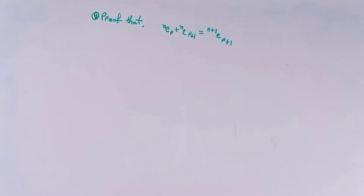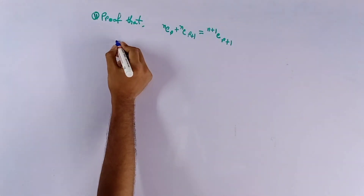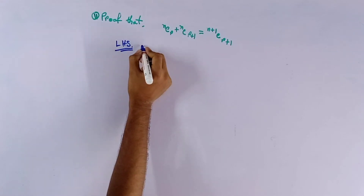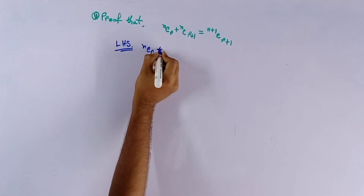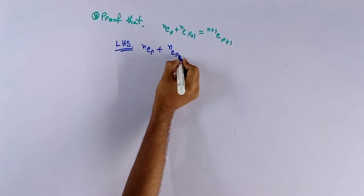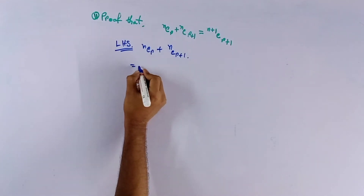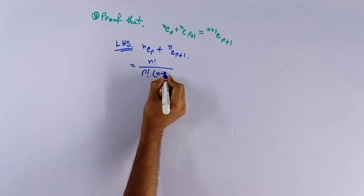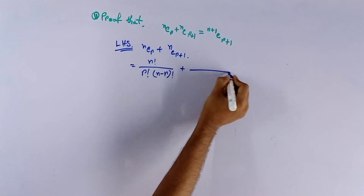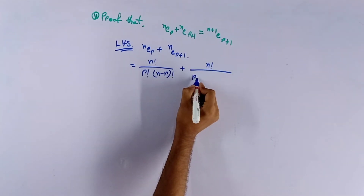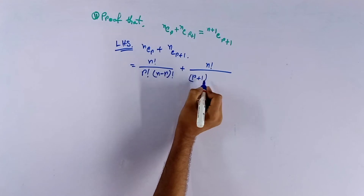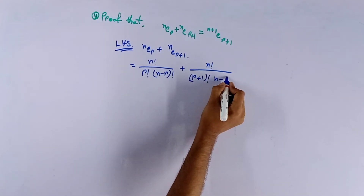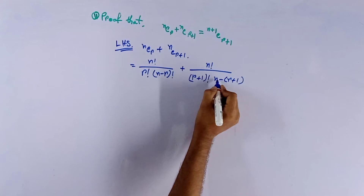Today we cover this general theory. We take the LHS of ⁿCᵣ + ⁿCᵣ₊₁, which equals n factorial by r factorial times (n minus r) whole factorial, plus n factorial by (r plus 1) factorial times (n minus r minus 1) whole factorial.